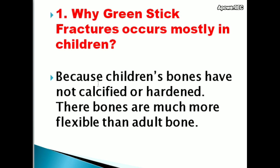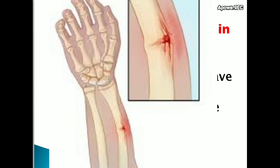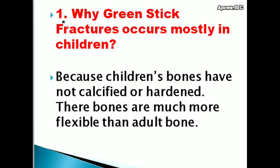Green stick fractures occur mostly in children because children's bones have not calcified or hardened. Their bones are much more flexible than adult bones. Green stick fractures — where the bone bends and breaks — usually occur in infancy and childhood.